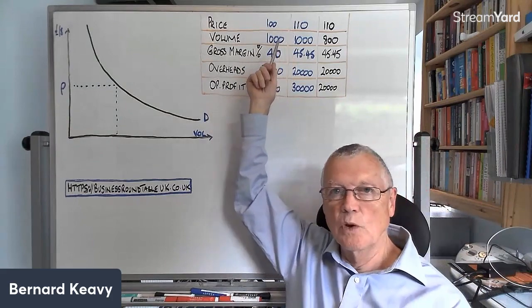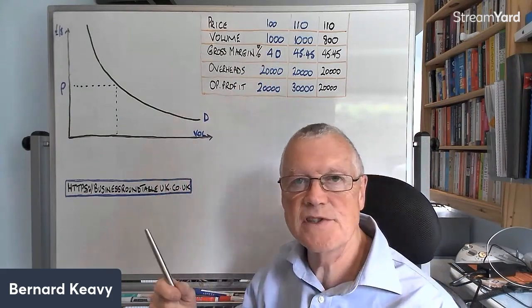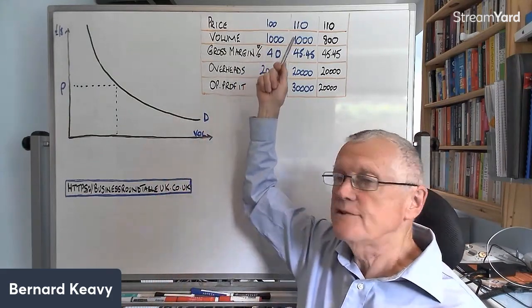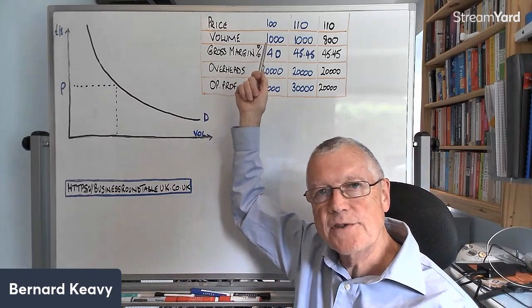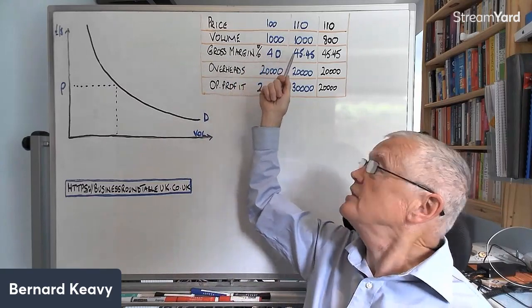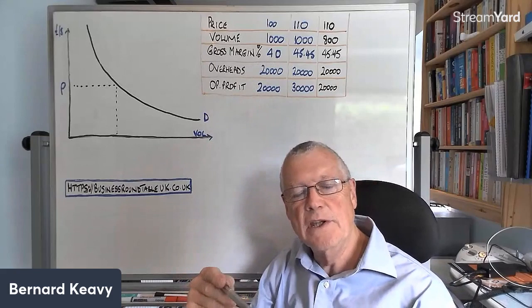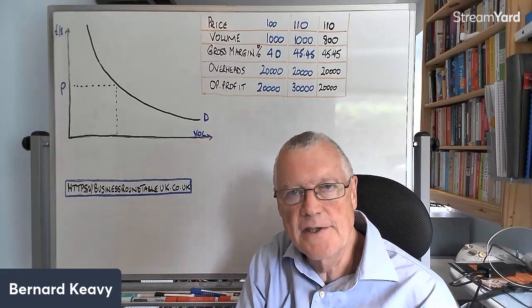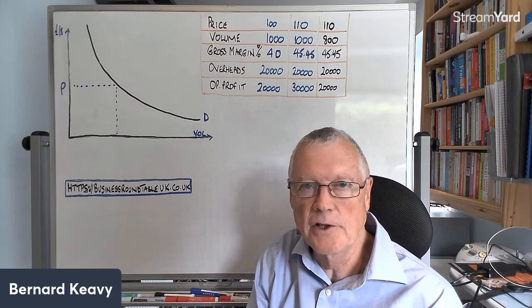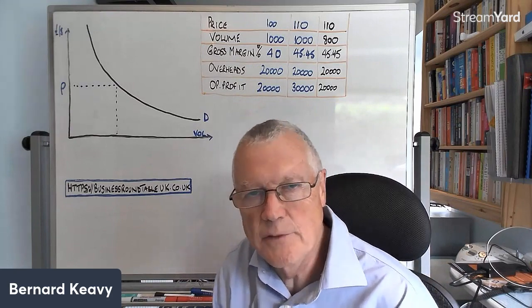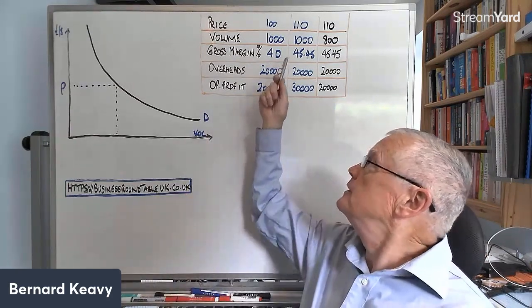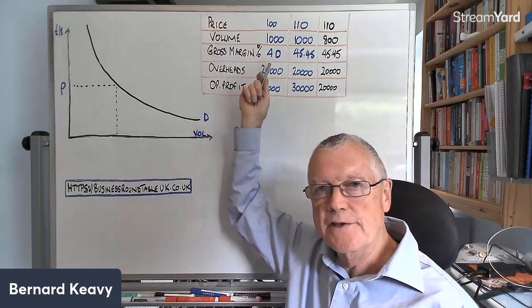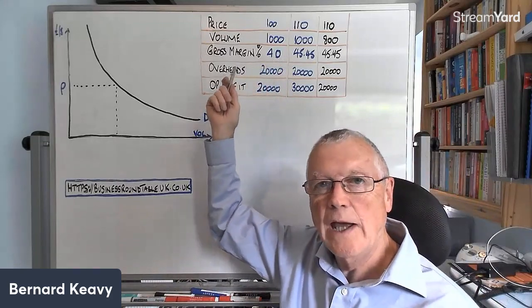So what if you could charge 10% more on average, get people to spend 10% more on average, and still retain all your customers? Now if you did that, you would actually have a higher gross margin because your variable costs—the costs of making and selling these things or services—that hasn't gone up, it's just what you're getting people to pay you has gone up. So you'll automatically have a higher gross margin, which means you'll make more gross profit.